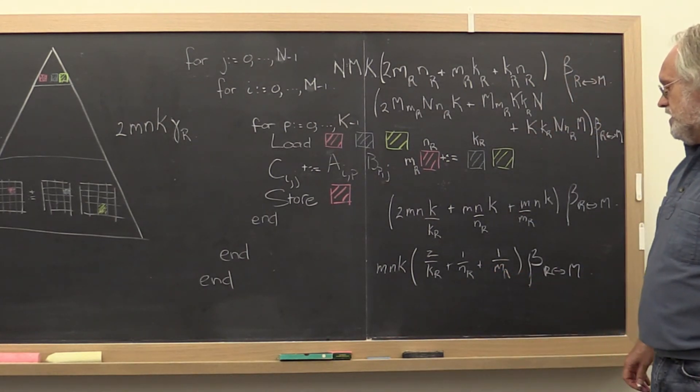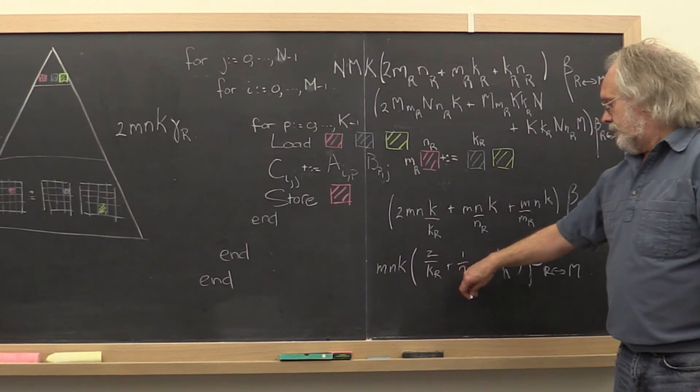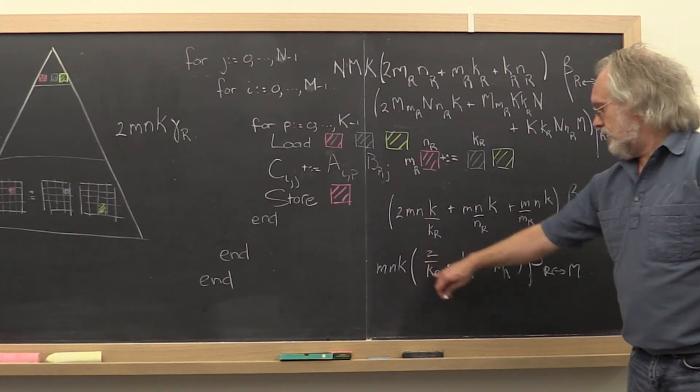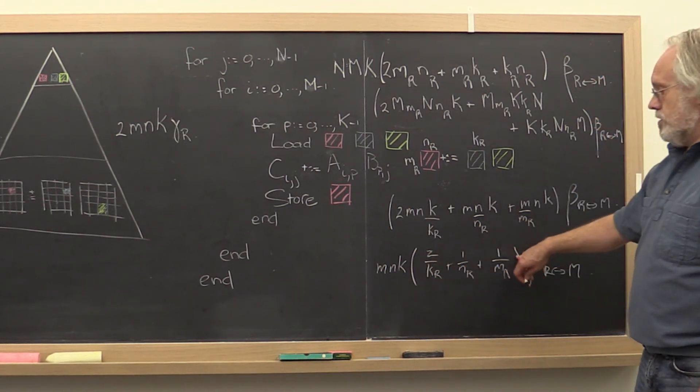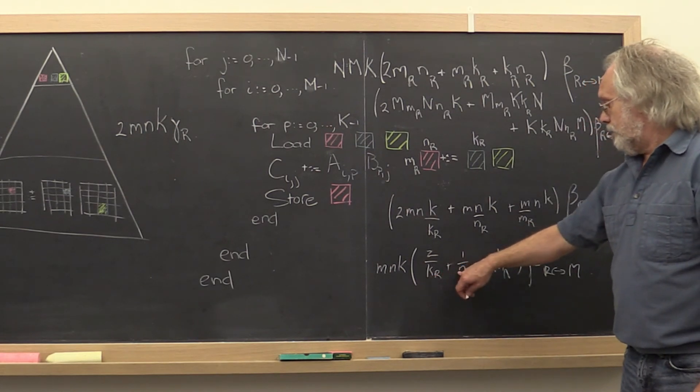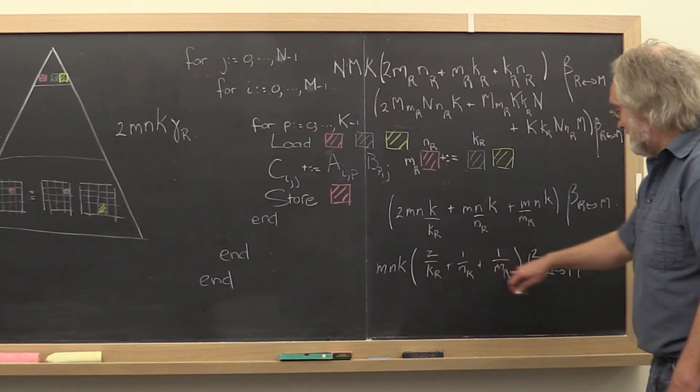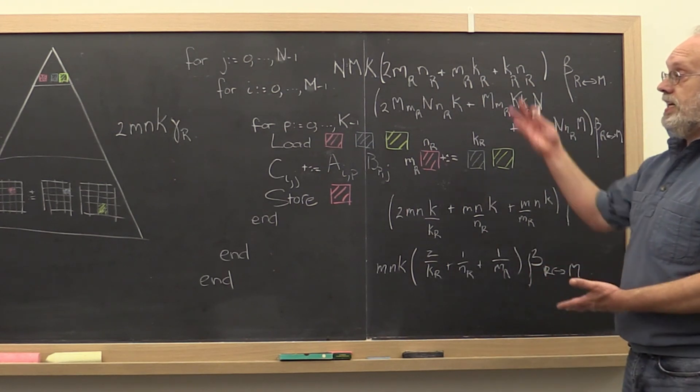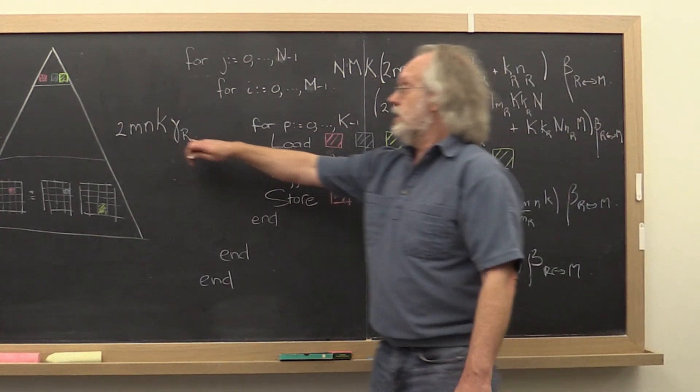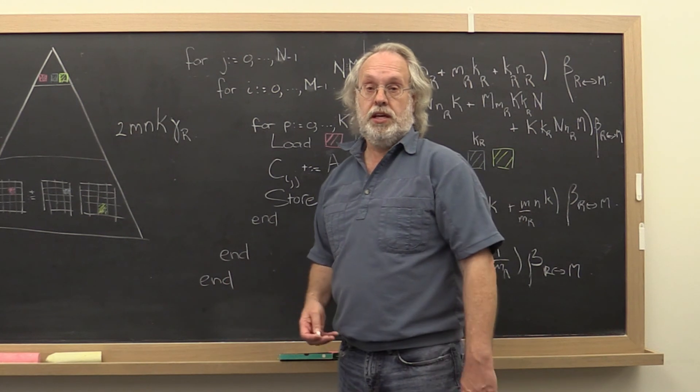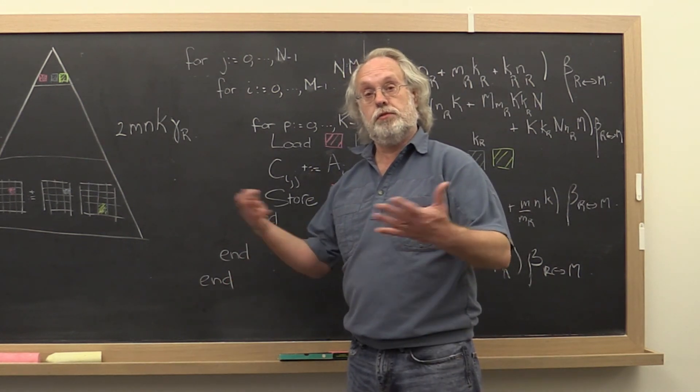So the good news is the fact that we're blocking is going to make this a smaller number. And of course the bigger we can pick those blocks, the smaller this number gets, and the less time we spend in moving data around, and the more time we spend doing useful computations. And that's a good thing. So that becomes part of the game now.